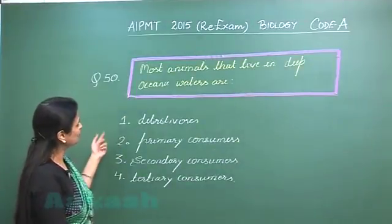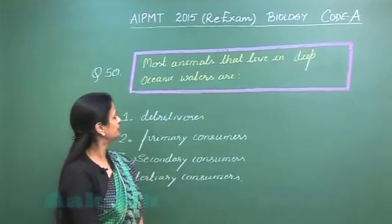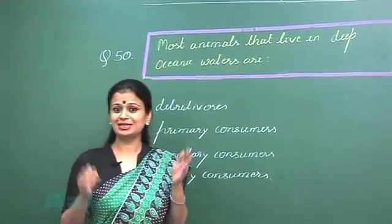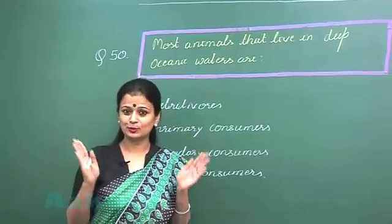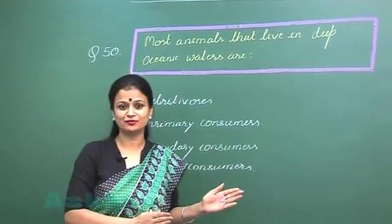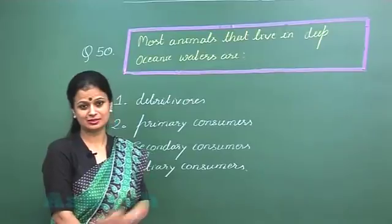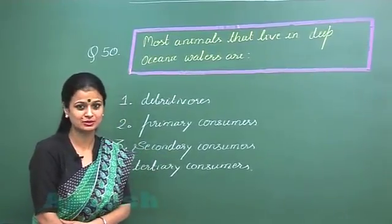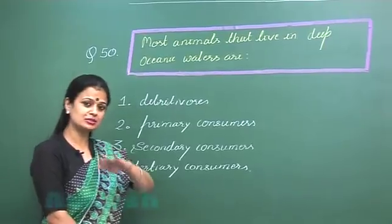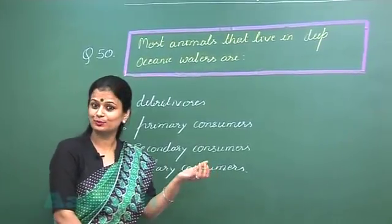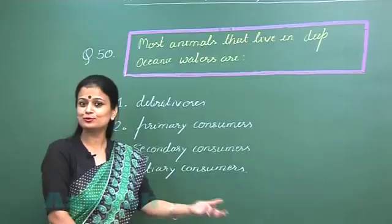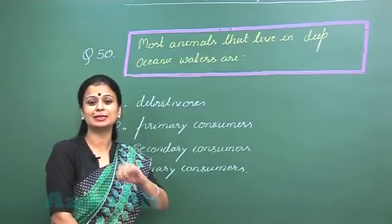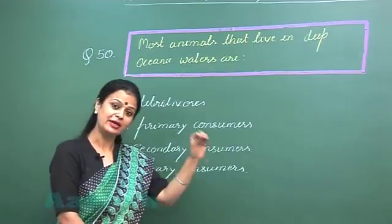Now question number 50: Most animals that live in deep oceanic waters are? You know that light does not reach the deeper part of the water body. If sunlight is not there, there won't be any producers. The consumers are dependent on producers, so if the producers are not there, the consumers will also be present in very less number in the deeper part of the water body.